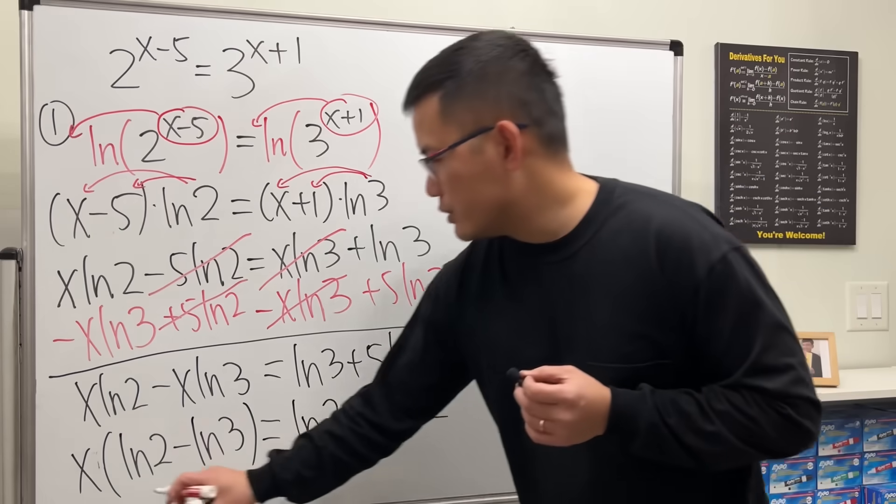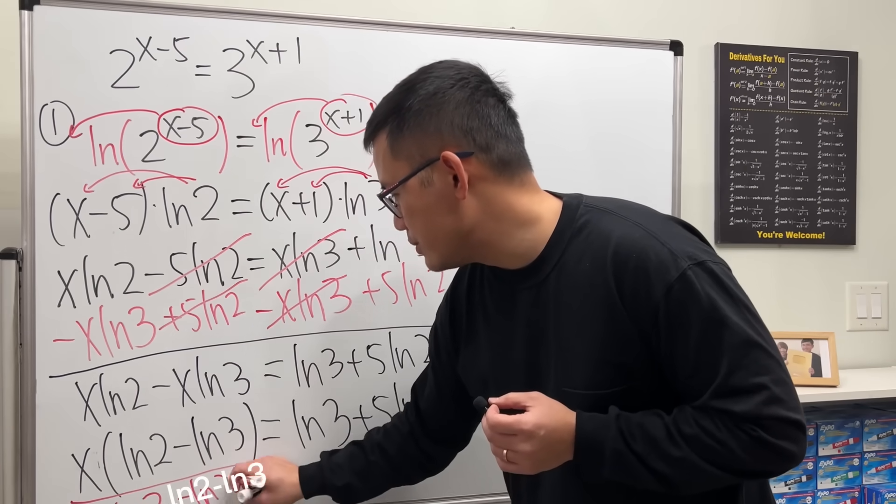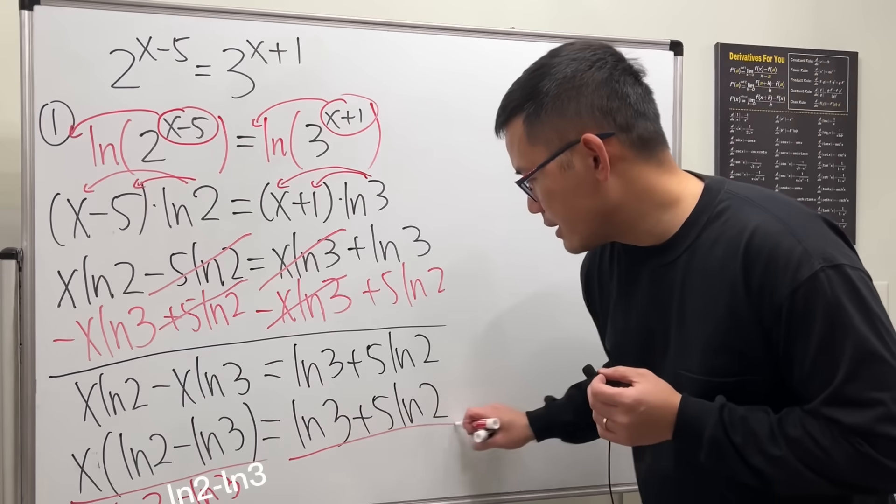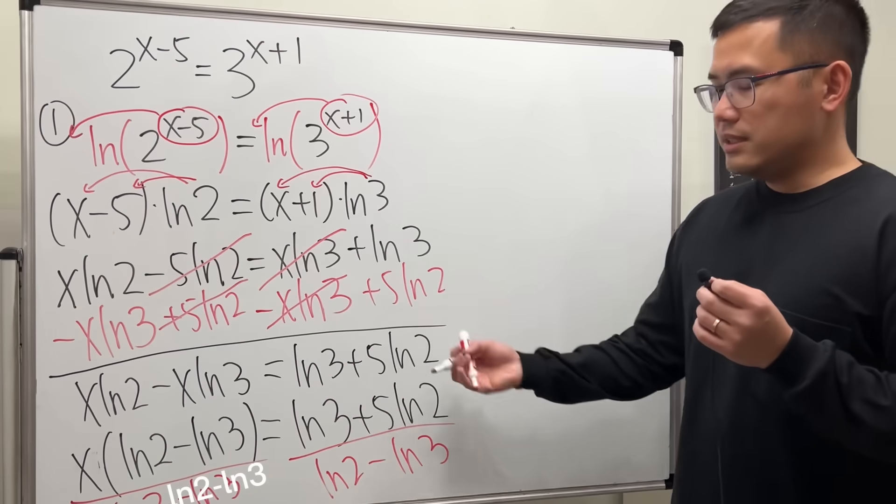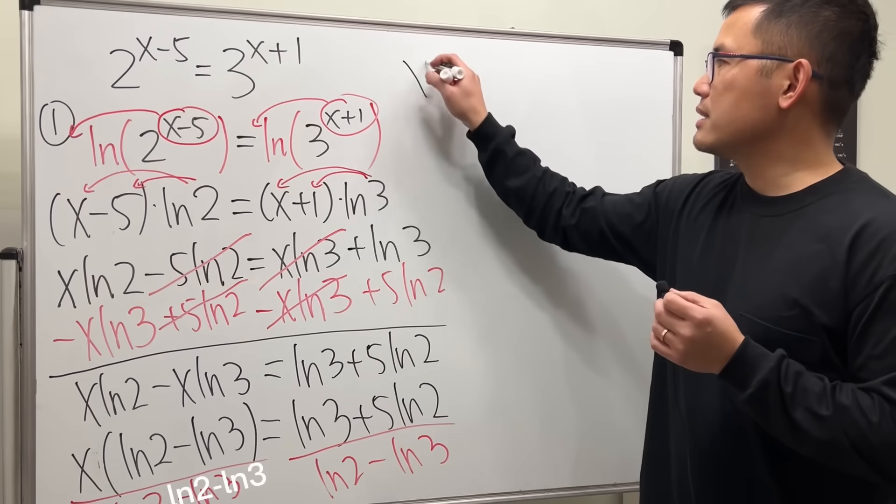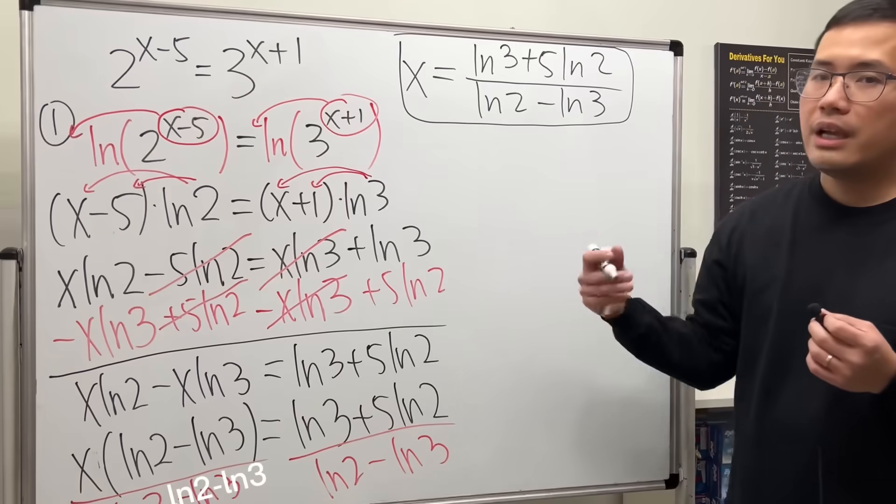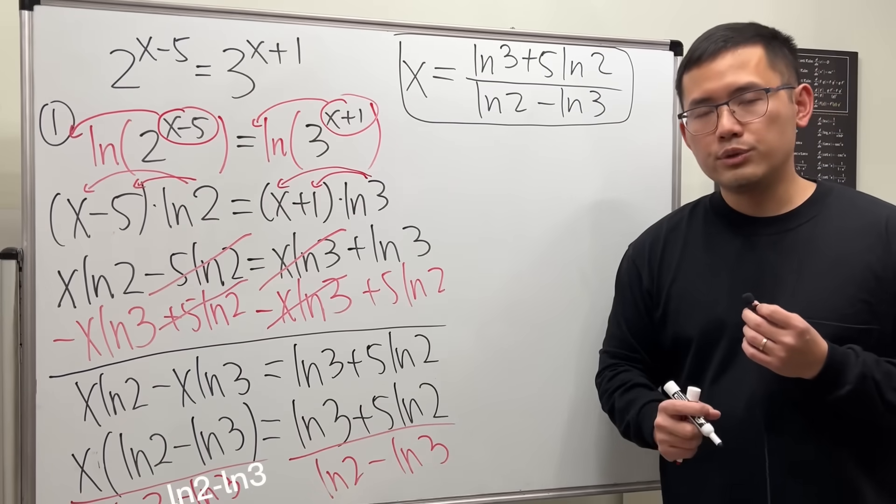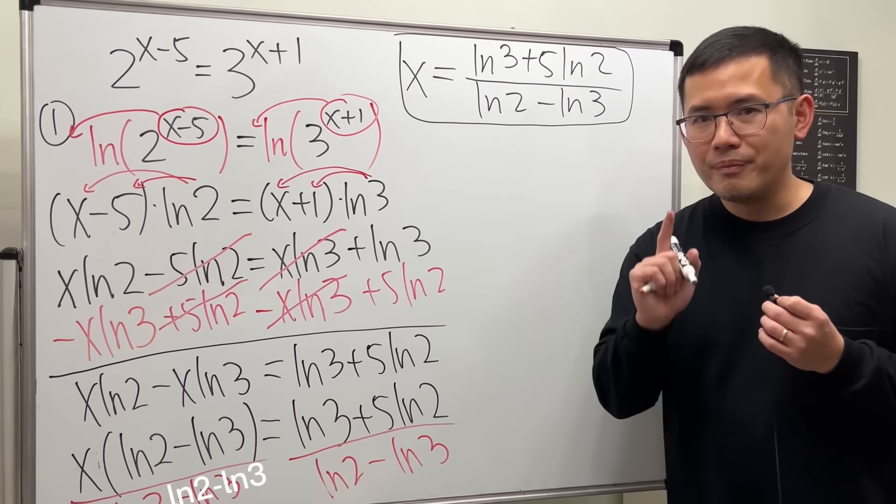And finally, we can just divide ln 2 minus ln 3 on both sides. So ladies and gentlemen, the answer will be x equals ln 3 plus 5 ln 2 over ln 2 minus ln 3. And this is pretty much it. And of course, you can use a calculator to figure out the approximation. But I will leave that to you.